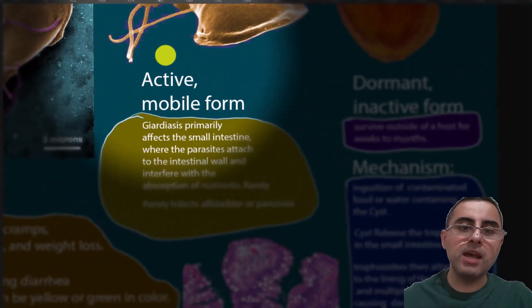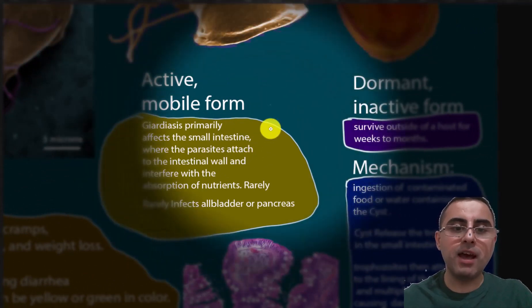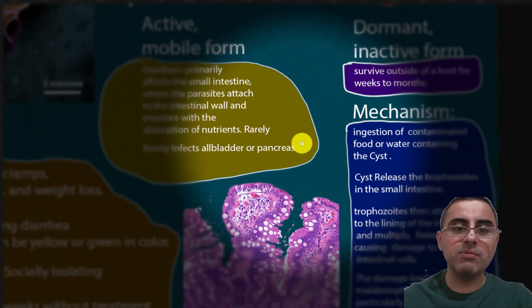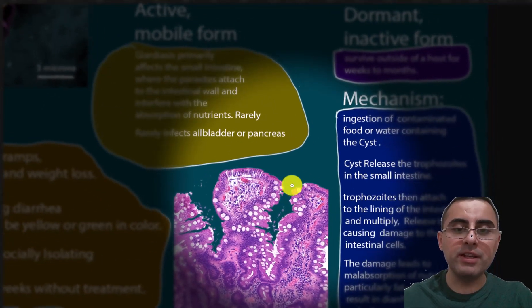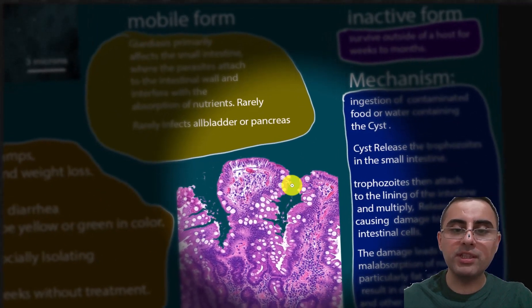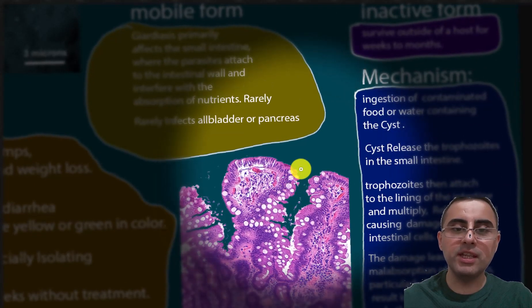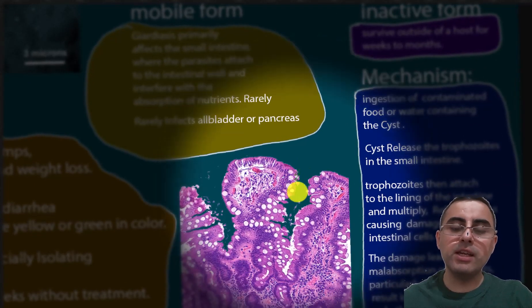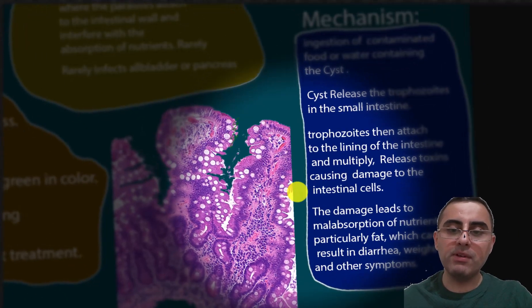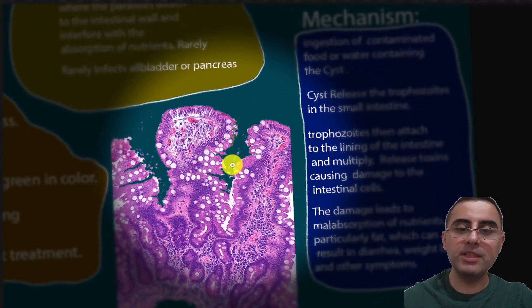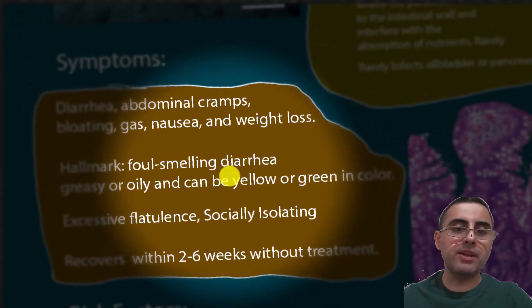Giardiasis primarily affects the small intestine. The parasite attaches to the small intestine and starts multiplying there, releasing toxins. These toxins cause damage to the cells of the intestine and lead to malabsorption, with fat absorption being especially disrupted.